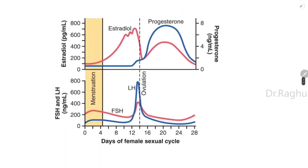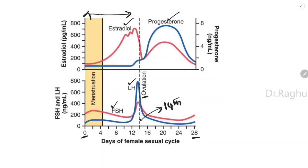Next we describe the interplay between the four hormones: estrogen, progesterone, FSH, and LH. This is a graphical representation of the entire menstrual cycle plotted from day 0 to day 28. The dotted line at day 14 marks when ovulation occurs, dividing the cycle into the pre-ovulatory follicular phase and the post-ovulatory luteal phase.